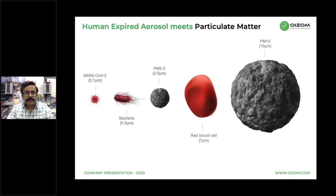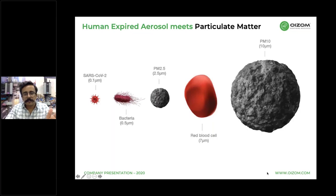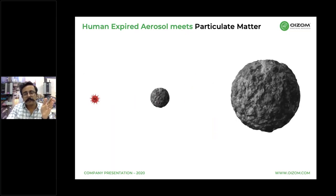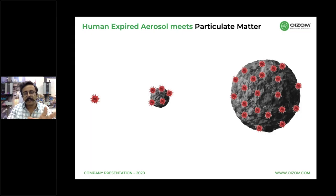Let's see what happens when human expired aerosols meet particulate matter. We discussed the sizes of the COVID-19 virus relative to PM2.5 and PM10. If these virus particles get deposited on PM2.5 or PM10 particles, this gives a very grave situation and raises the question of how these particles can then spread through the air.